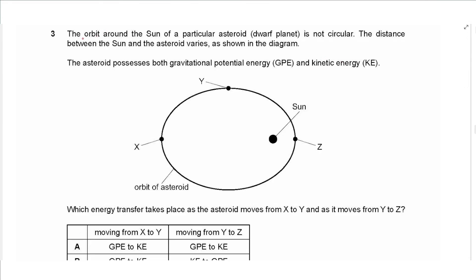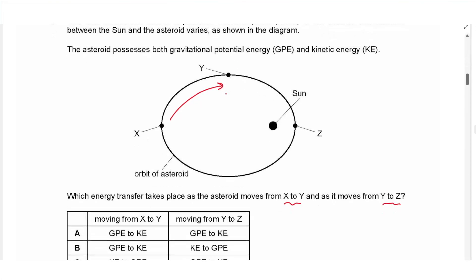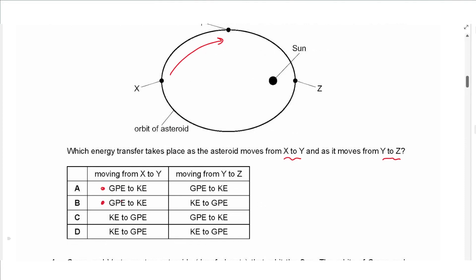The next question says, the orbit around the sun of a particular asteroid is not circular. The asteroid possesses both gravitational energy and kinetic energy. Which energy transfer takes place as the asteroid moves from X to Y and from Y to Z? From X to Y, it's getting closer to the sun, so it's losing GPE. As height from the sun decreases, GPE decreases and kinetic energy increases. From Y to Z, it's also losing height and getting closer to the sun, so it's also losing GPE and gaining kinetic energy. The answer is A.